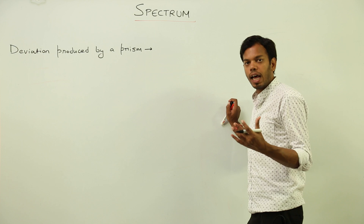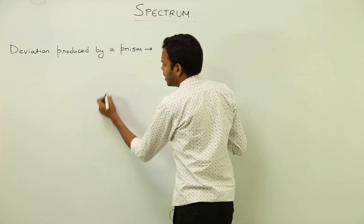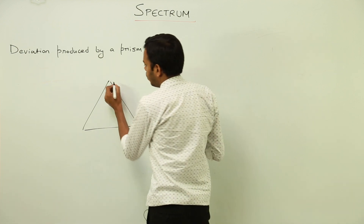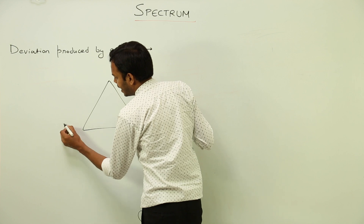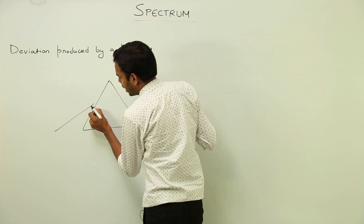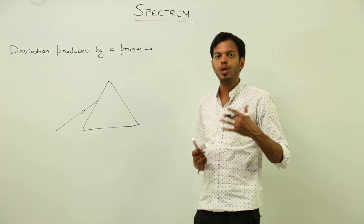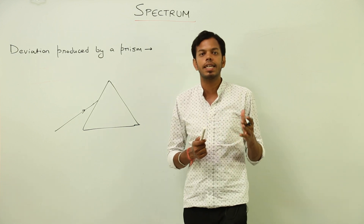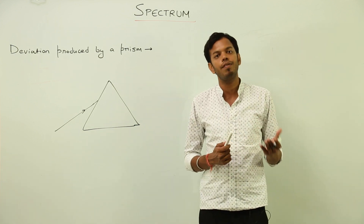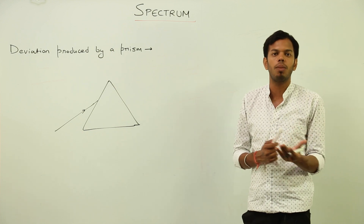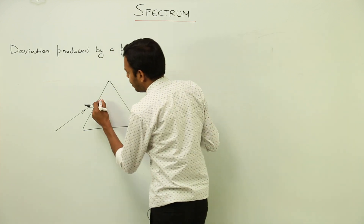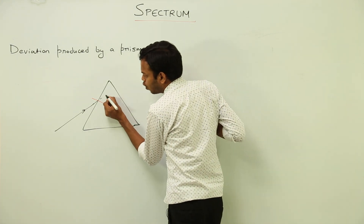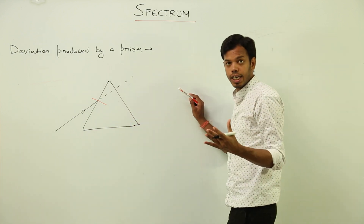Deviation is actually the bending of light from its original path. For instance, suppose this is our triangular prism. Consider an incident ray coming at this angle. When we follow the rules of refraction, we first check whether the ray is going from rarer to denser or denser to rarer, and then proceed taking the ray away from or towards the normal. I'll be drawing a normal on this surface.